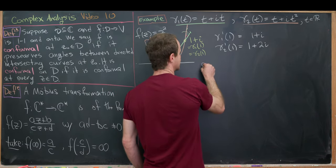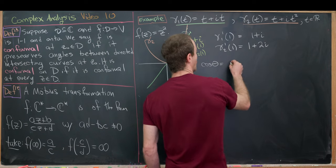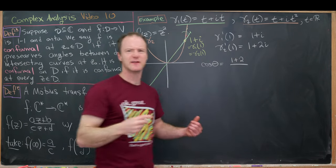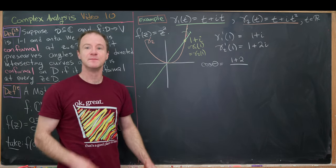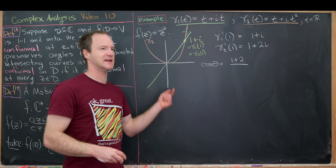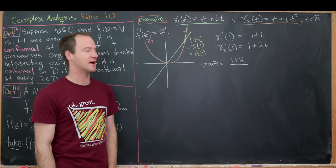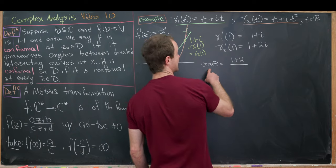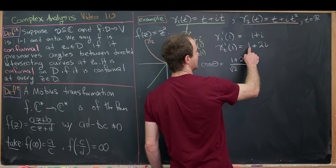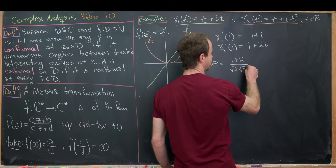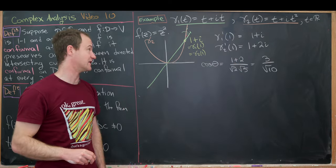We can easily calculate the cosine of the angle between these. The cosine equals 1·1 + 1·2 = 3 in the numerator (the dot product of the tangent vectors). In the denominator, we have the norm of (1+i), which is √2, times the modulus of (1+2i), which is √5. In the end we get 3 over √10 — that's the cosine of the angle between the two curves.